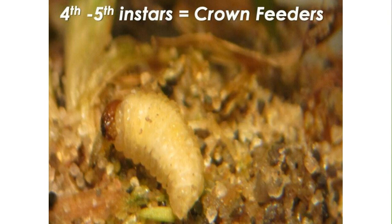Their biology as crown feeders — as they get too large to fit inside the stem — means we need controls that work very effectively and very quickly. As they emerge from the plant in the third to fourth instar and start feeding on the crown, that's the active growing portion of the plant. If we don't have controls in place prior to their arrival with some residual activity, we could see serious turf collapse if we have a lot of larvae in a small area.